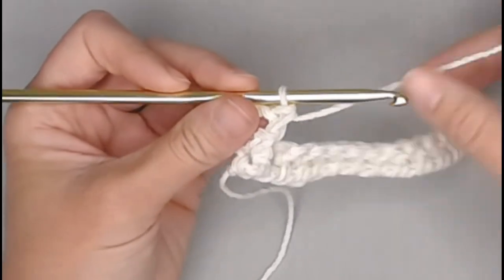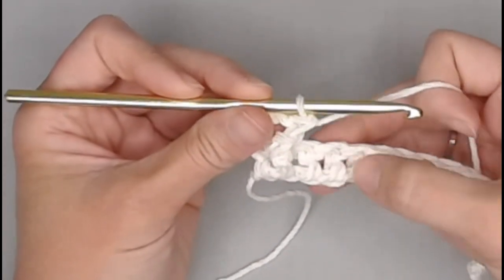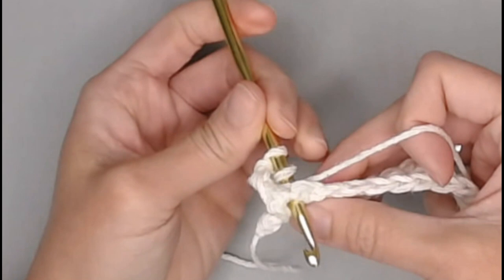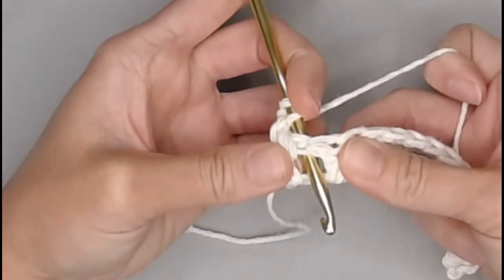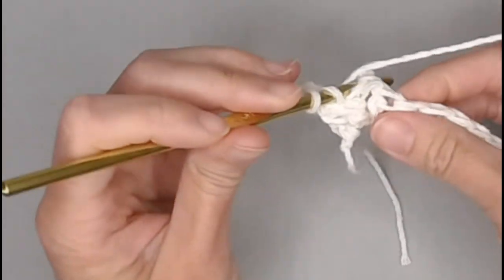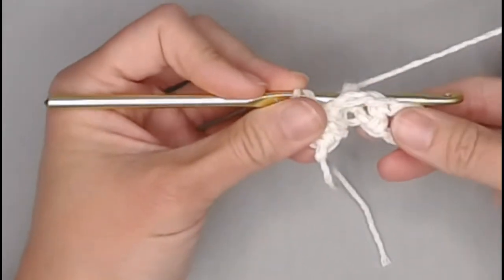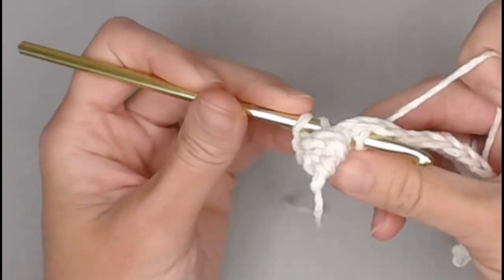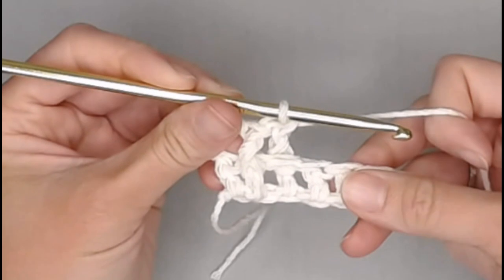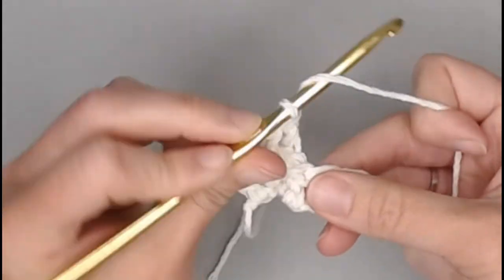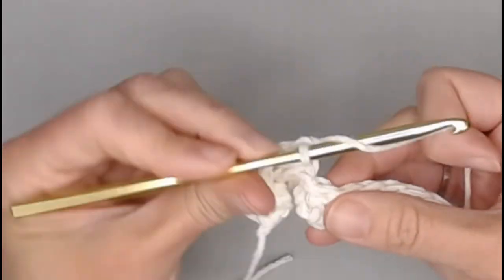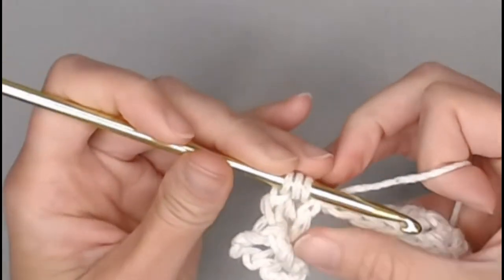The next three stitches, we will back post double crochet around those stitches. So yarn over, insert your crochet hook from the back to the front of that space between the two stitches. Push that double crochet back, and go through the next space between those two stitches. Yarn over, pull through, and pull all the way through. Yarn over, pull through two. Yarn over, pull through two. And that is our back post. One more back post for a total of three back post double crochet stitches.